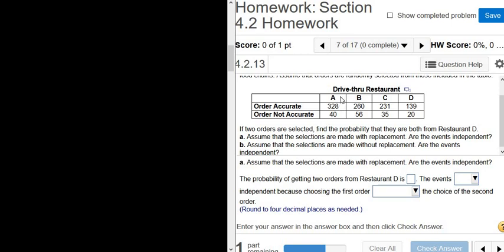In this problem we have some data regarding a drive-thru restaurant. It says, if two orders are selected, find the probability that they are both from restaurant D. And then part A says, assume the selections are made with replacement, are the events independent?